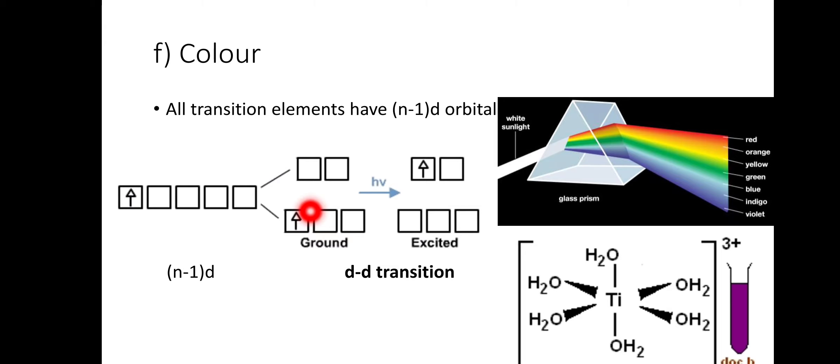The electron jumps from lower orbitals to the higher orbital. They absorb energy, they absorb visible light, and they jump from ground state to the excited state.